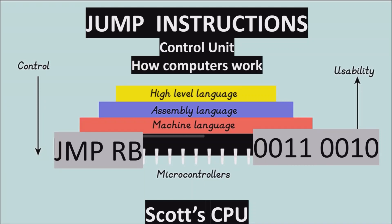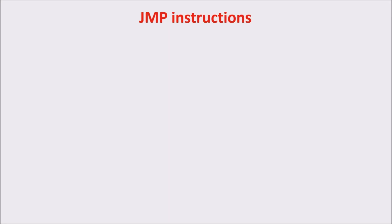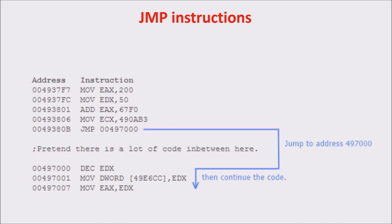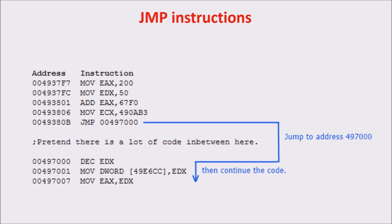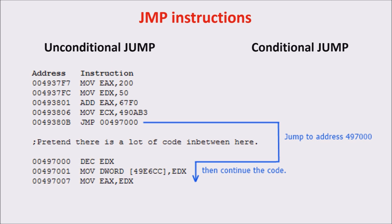This video is about control unit and instruction code. Continuing to build our instruction set, we see the jump instructions, and in particular the unconditional jump instruction. Jump instructions are used for changing the flow of execution of instructions in the processor. If we want to jump to any instruction in between the code, this can be achieved by these instructions. We have two kinds of jump instructions: conditional jumps and unconditional jumps.